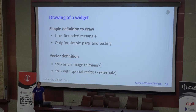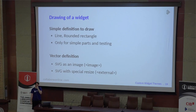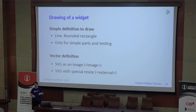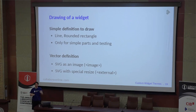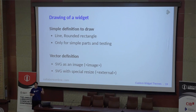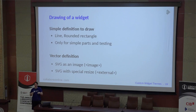The most interesting part is how the widgets are drawn. In the definition, we have simple possibilities — you can draw just a line or a rounded rectangle, but those are mostly for checking the bounds of the widget. Mostly what you want to use is the vector definition — SVG — and in this case you have two possibilities: either use SVG as an image, or use SVG with a special resize algorithm.